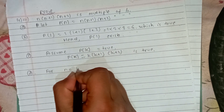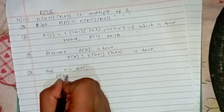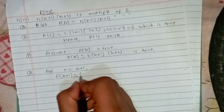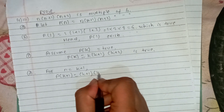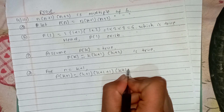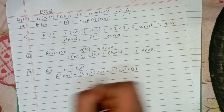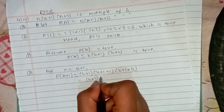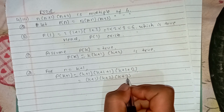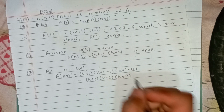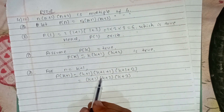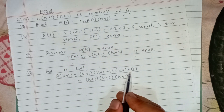For n equals k plus 1, P(k+1) becomes: k plus 1 into k plus 1 plus 1 into k plus 1 plus 2, which is k plus 1 into k plus 2 into k plus 3.